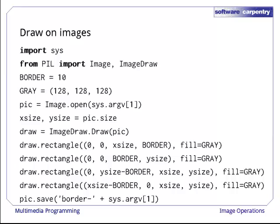Here's another simple image processing program that draws directly on top of pictures. It starts by defining the width of the border we're going to draw and the shade of grey we're going to use, then opens up an image and gets its size. The program then creates a helper object around the picture by calling ImageDraw.Draw. This helper is the thing that knows how to draw boxes, circles, and other shapes. The Python Imaging Library keeps that logic in a separate object so that programs that don't need it don't have to load it. Other libraries may make the drawing methods part of the picture object or keep them in an entirely separate library altogether. No matter where they are, the basic functionality is likely to be the same.